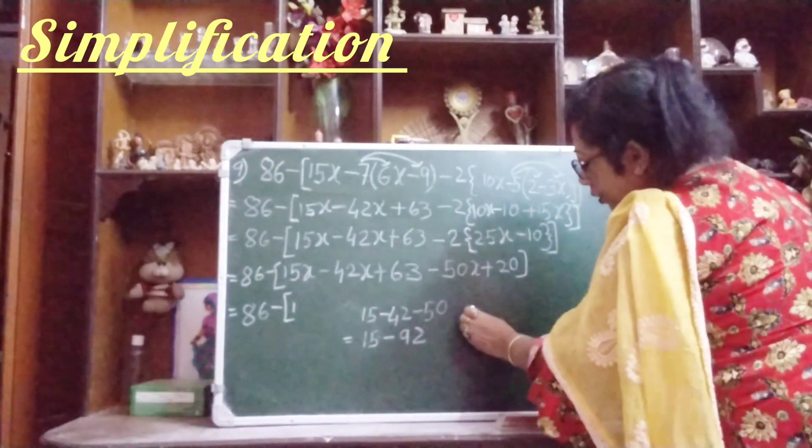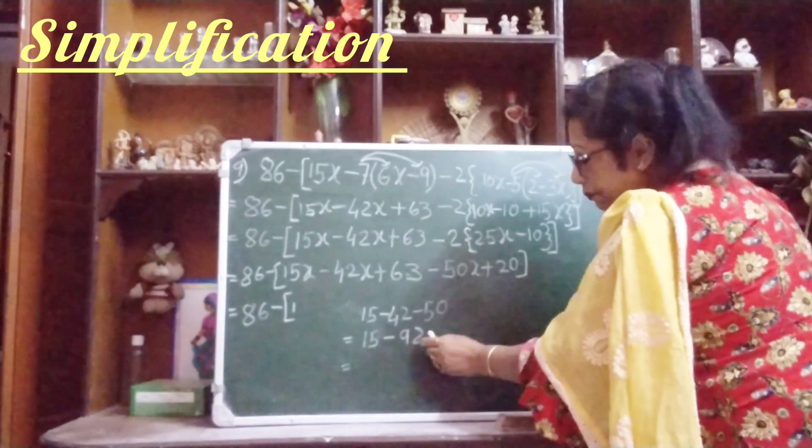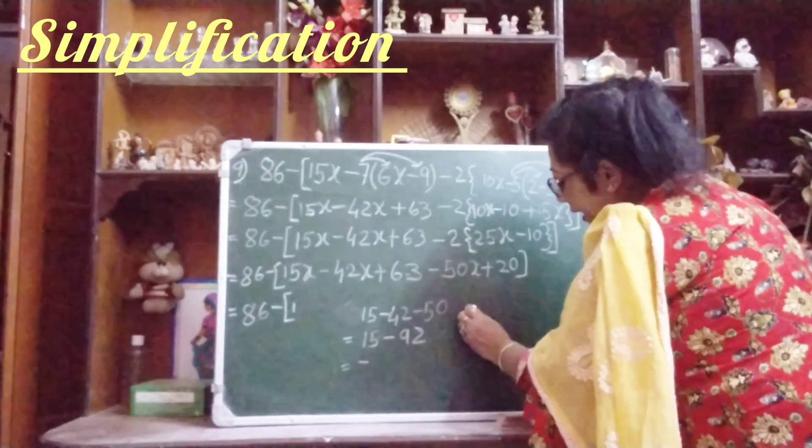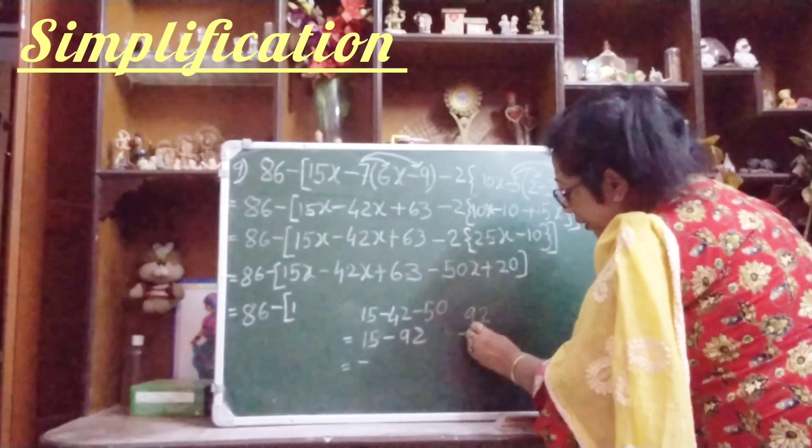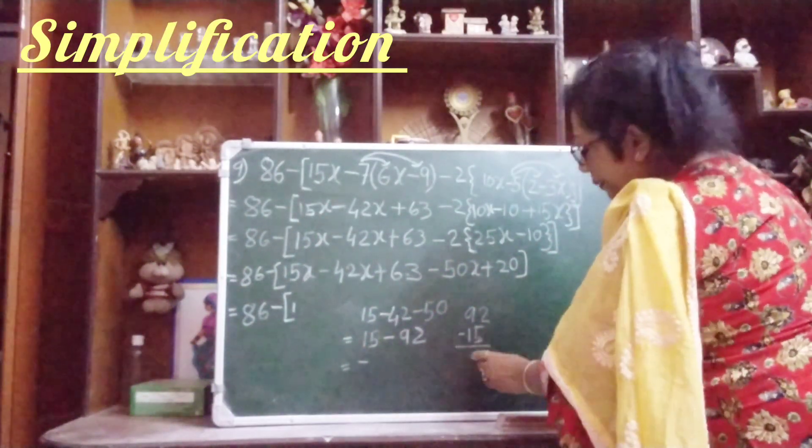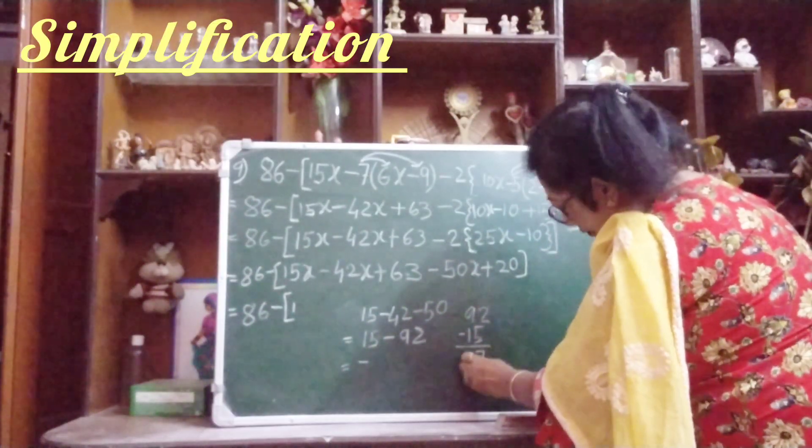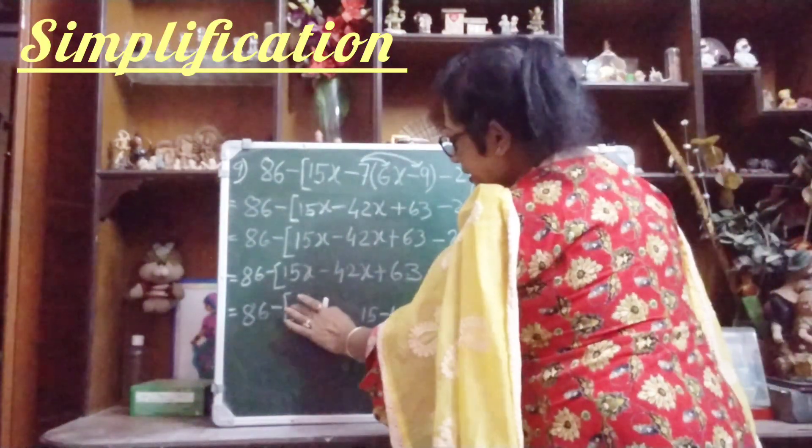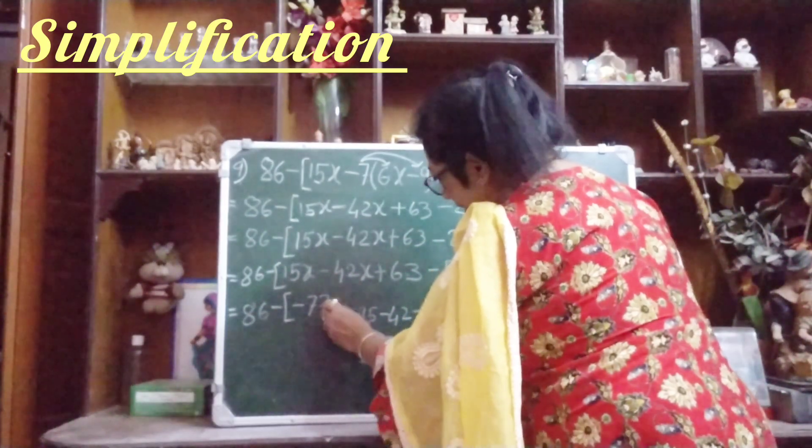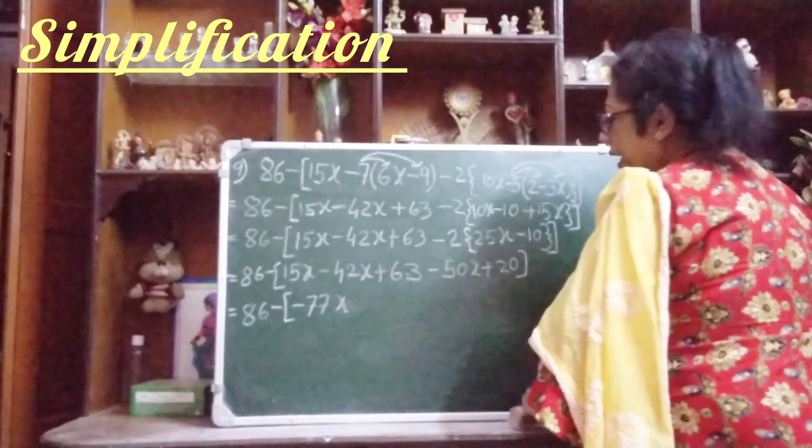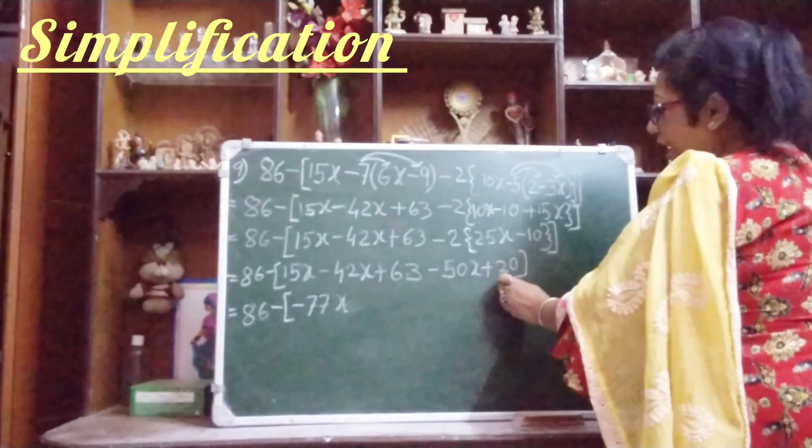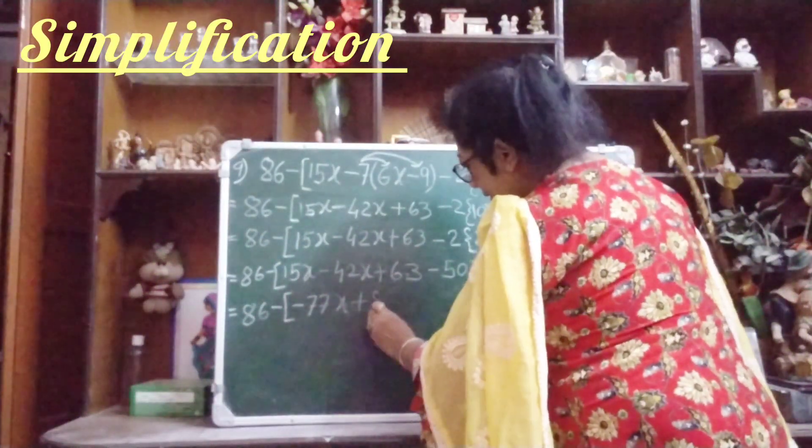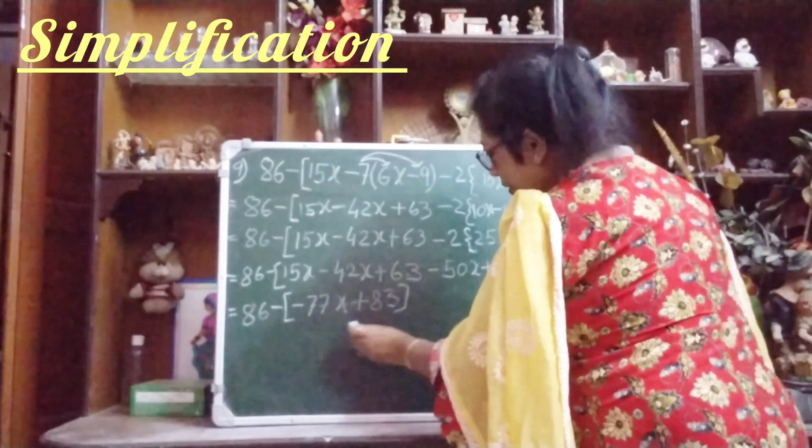So write here minus 77x. Now here, the constant terms, 63 plus 63 plus 20. So 63, 73, 83, so plus 83, third bracket close. Next step, 86, now we will remove the third bracket or square bracket.